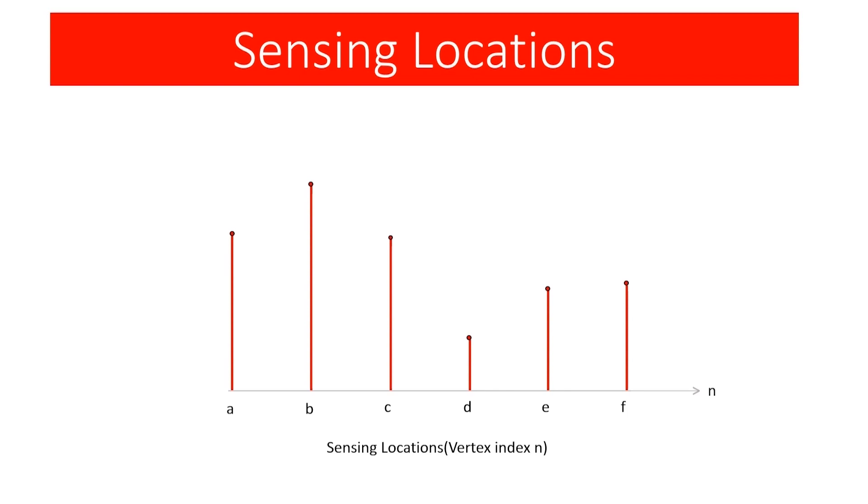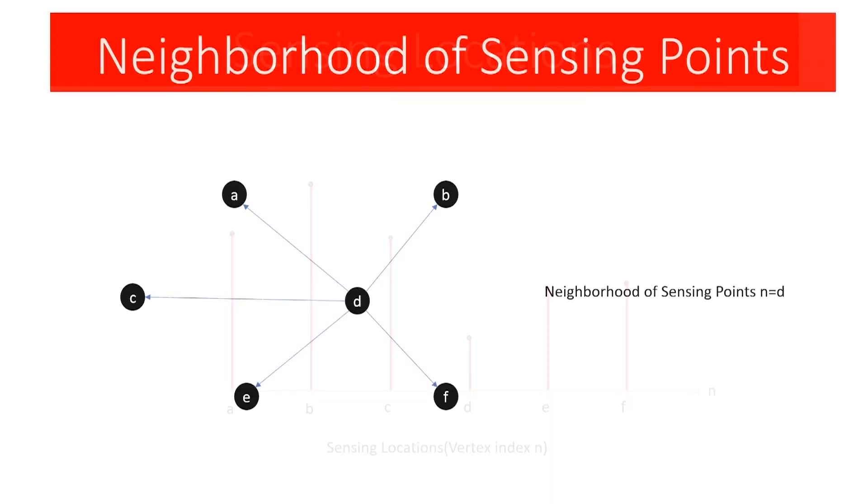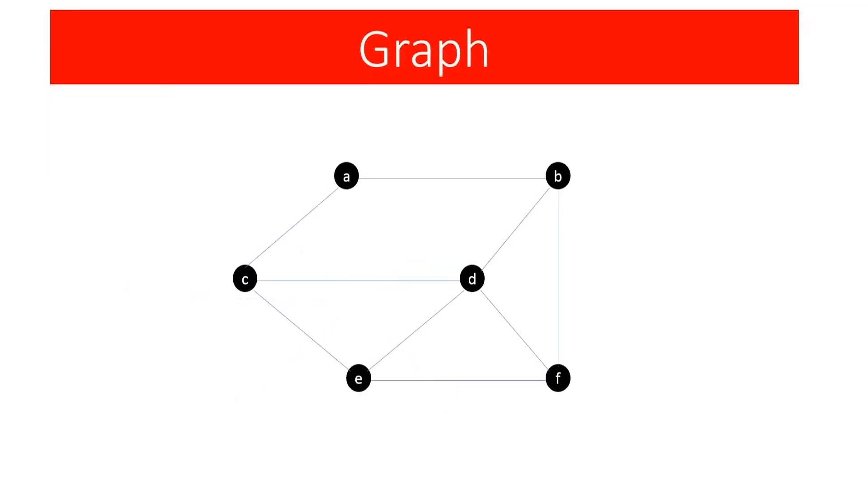But aren't we missing some other information we have? Distance between data points. There is a connection between all data points respective of their location. We can represent that distance in a graph like this.